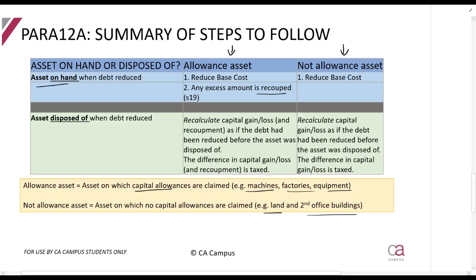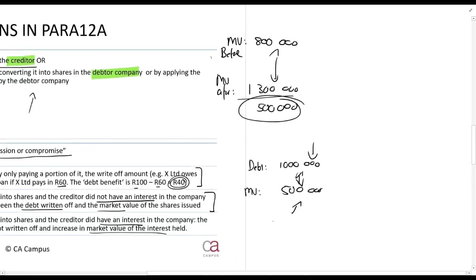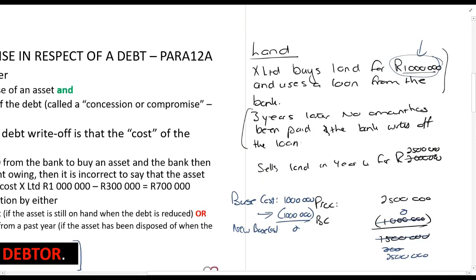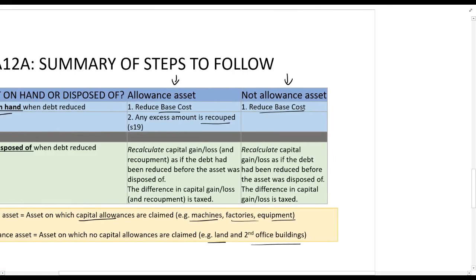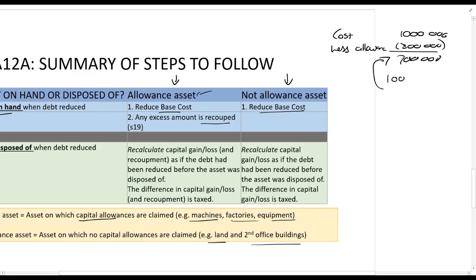If the asset is still on hand when the debt is written off, take the amount written off and reduce the base cost by that amount - whether it's an allowance asset or not. If it's an allowance asset, your base cost is calculated as cost less allowances claimed. So if cost is one million rand and you've claimed 300,000 rand in allowances, the base cost is 700,000 rand - deduct the debt benefit from there. If the debt benefit exceeds that amount, say one million rand, then the 300,000 rand excess becomes a recoupment. If it's not an allowance asset like land, you simply reduce the base cost.